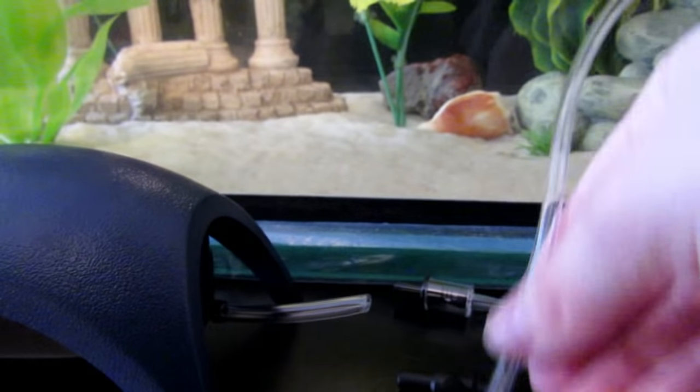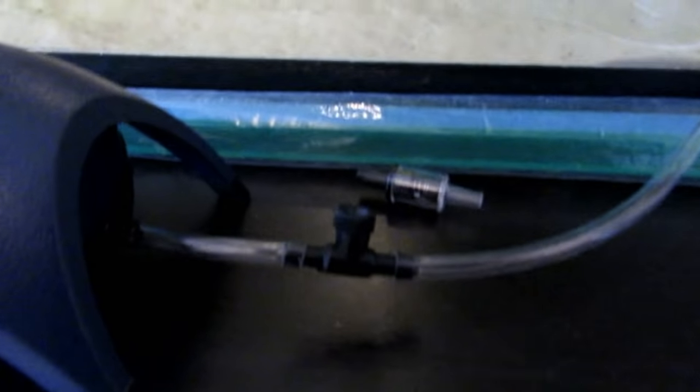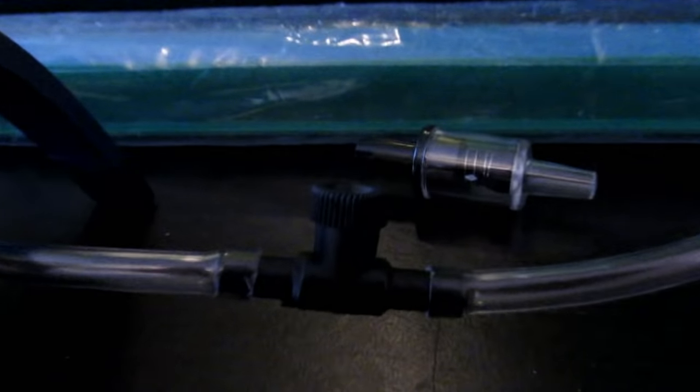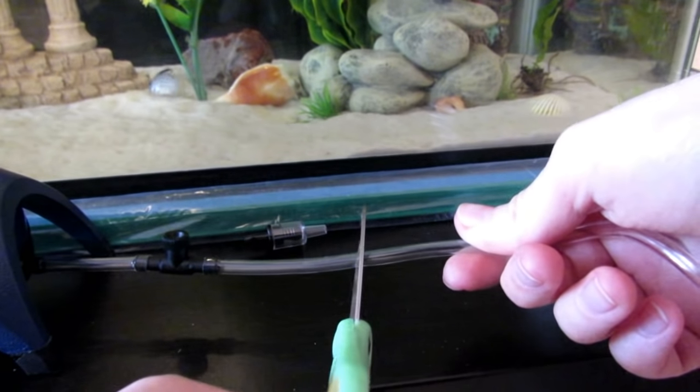Once you cut it, take the air control thing and attach the tubing to both sides of it. Once you have that on, we're going to go ahead and put the check valve in too. Go a little ways past the air control thing and cut the tubing again.